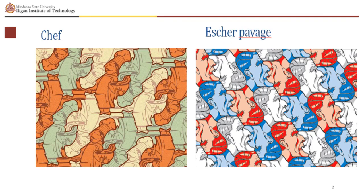To create a tessellation, map out a regular division of a plane, usually of triangles or hexagons, to get a basic skeleton for the shape. Deform the basic shapes into familiar figures like that of birds, a person's head, or any figure you can think of. Apply the respective rigid motions to them such that they are able to cover a plane.